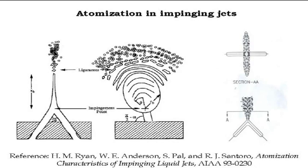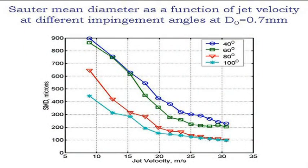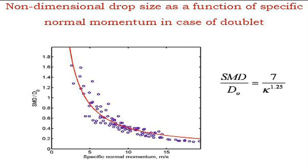We started with a doublet: you impinge, and see how the droplet size varies with respect to jet velocity. You can change the orifice dimension, the angle of impingement, the velocity of impingement — there are a number of parameters. It's very clear that as velocity increases, the droplet size decreases. Depending on whether the angle becomes steeper, the particle size decreases. You can plot it in an empirical form in terms of what I refer to as specific normal momentum — which is the normal momentum divided by the mass flux at the point of impingement.